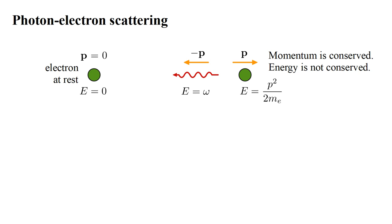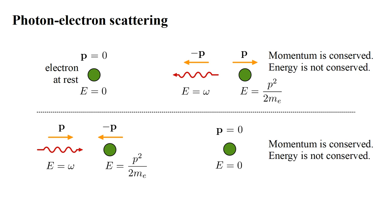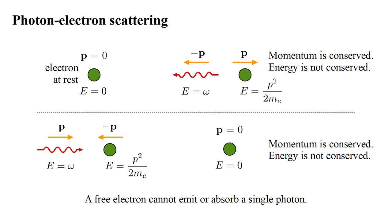If instead the electron was initially in motion, we can always use a reference frame moving with the electron, so we again have this identical scenario. Now imagine the reverse process: a photon and electron have opposite momenta. The electron absorbs the photon and ends up with zero momentum, therefore zero energy, but the initial energy of the system was not zero. Therefore momentum is conserved but energy is not. From these considerations, we conclude that a free electron cannot emit or absorb a single photon.